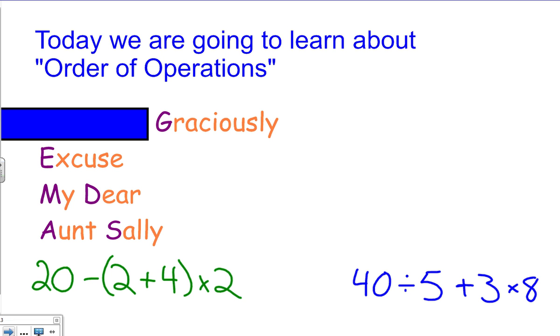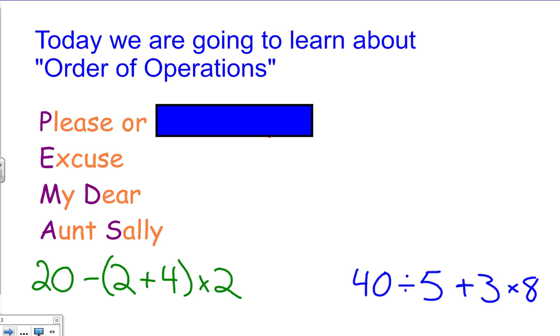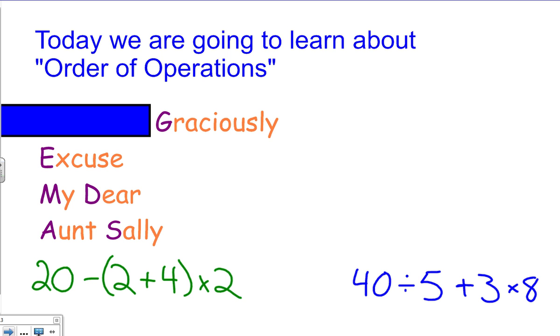First of all, we have a little catchphrase that we like to think of, just like you may have learned the planets: my very educated mother just served us nachos. We also have a catchphrase for order of operations. You may have heard Please Excuse My Dear Aunt Sally, but we want to change that now that we're getting older to Graciously Excuse My Dear Aunt Sally. Graciously, similar to please, instead of just standing for parentheses, actually stands for all grouping symbols. So we could have this grouping symbol for a set of numbers or even a bracket along with the parentheses.